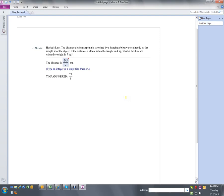Okay, I'd like to address this question by first carefully reading it. Hooke's Law. The distance d when a spring is stretched by a hanging object varies directly as the weight of the object. If the distance is 70 centimeters when the weight is 4 kilograms, what is the distance when the weight is 7 kilograms?